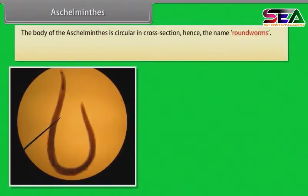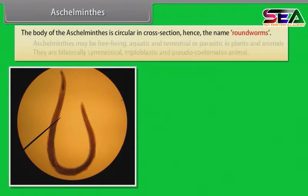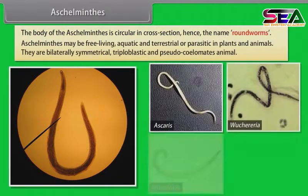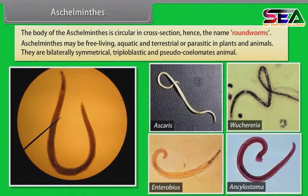Aschelminthes. The body of Aschelminthes is circular in cross-section, hence the name roundworms. Aschelminthes may be free-living, aquatic and terrestrial, or parasitic in plants and animals.